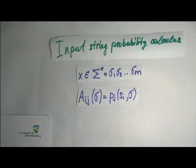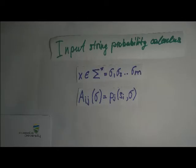Let's consider input string probability calculus. Assume X is an input string when X is a concatenation of sigmas from 1 to M. For probability calculus, we define two-dimensional matrices A from sigma by the following formula.